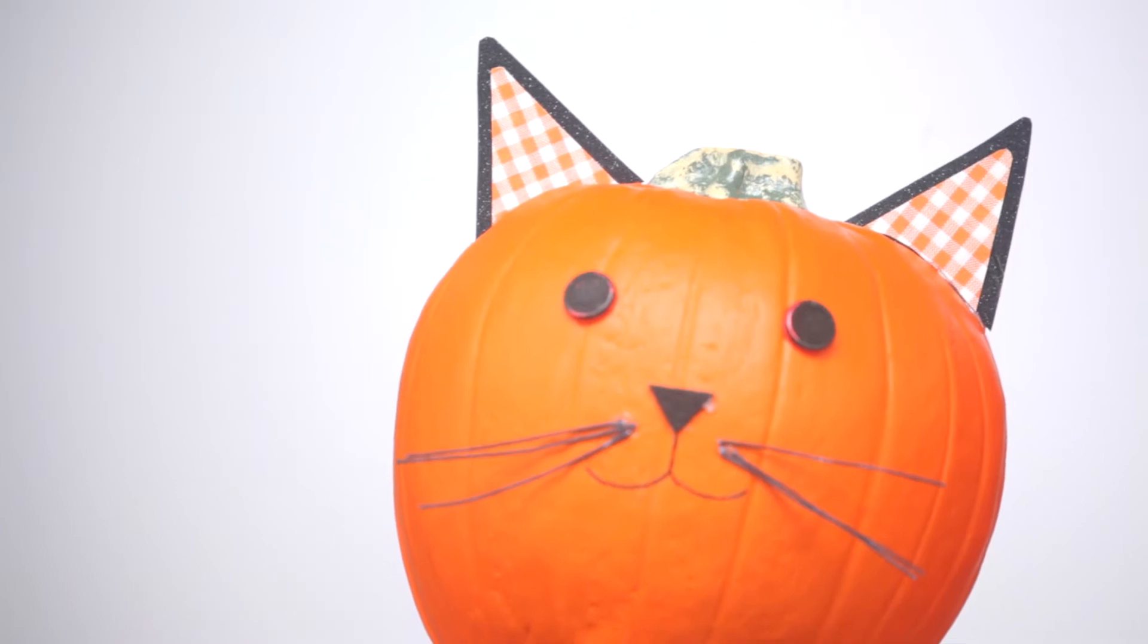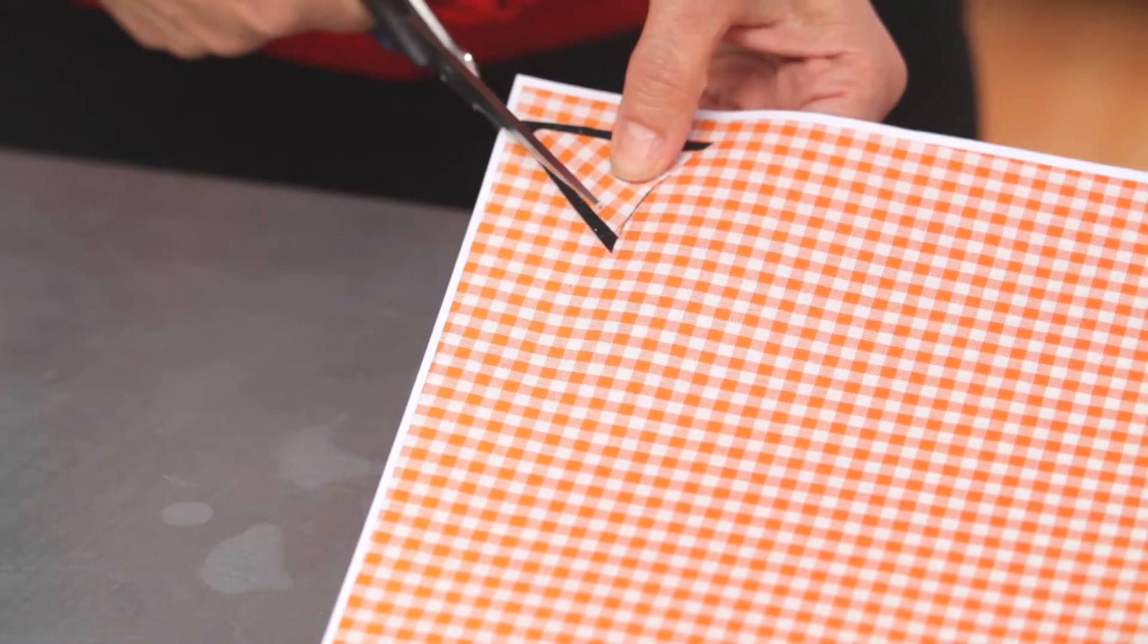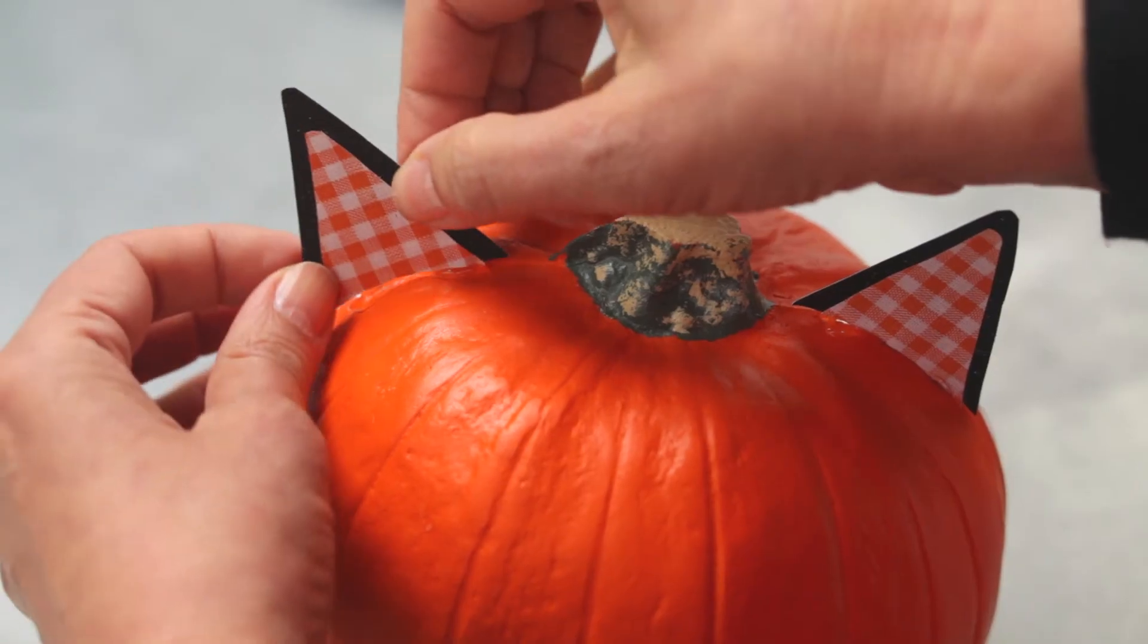I like to start with the ears. You can find a template on allyou.com or draw them freehand. Cut out a pair of outer ears and a pair of inner ears. Glue them together then glue one ear to either side of the pumpkin stem.